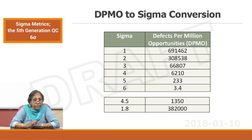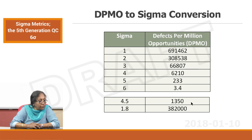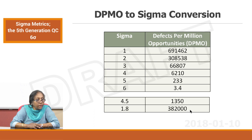If you look at the conversion of DPMO to six sigma — we already said that if you make fewer than 3.4 mistakes per million operations, your laboratory standard is six sigma. There are scales which tell you the conversion: if you make 1350 mistakes per million operations you have got a 4.5 sigma. You can have a 1.8 sigma, which is not acceptable — that means you are making 382,000 mistakes per million operations.